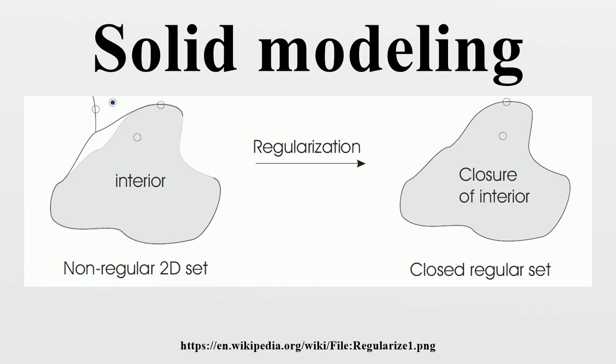A triangulation of a semi-analytic set into a collection of points, line segments, triangular faces, and tetrahedral elements is an example of a stratification that is commonly used. The combinatorial model of solidity is then summarized by saying that in addition to being semi-analytic bounded subsets, solids are three-dimensional topological polyhedra, specifically three-dimensional orientable manifolds with boundary.